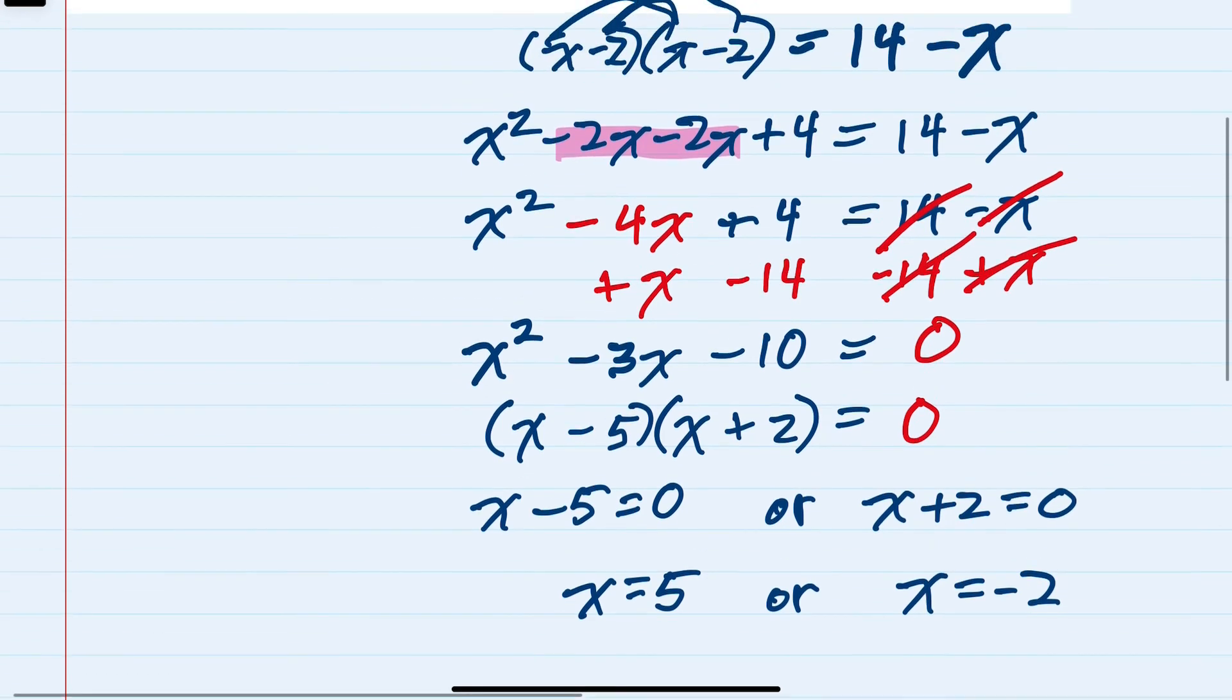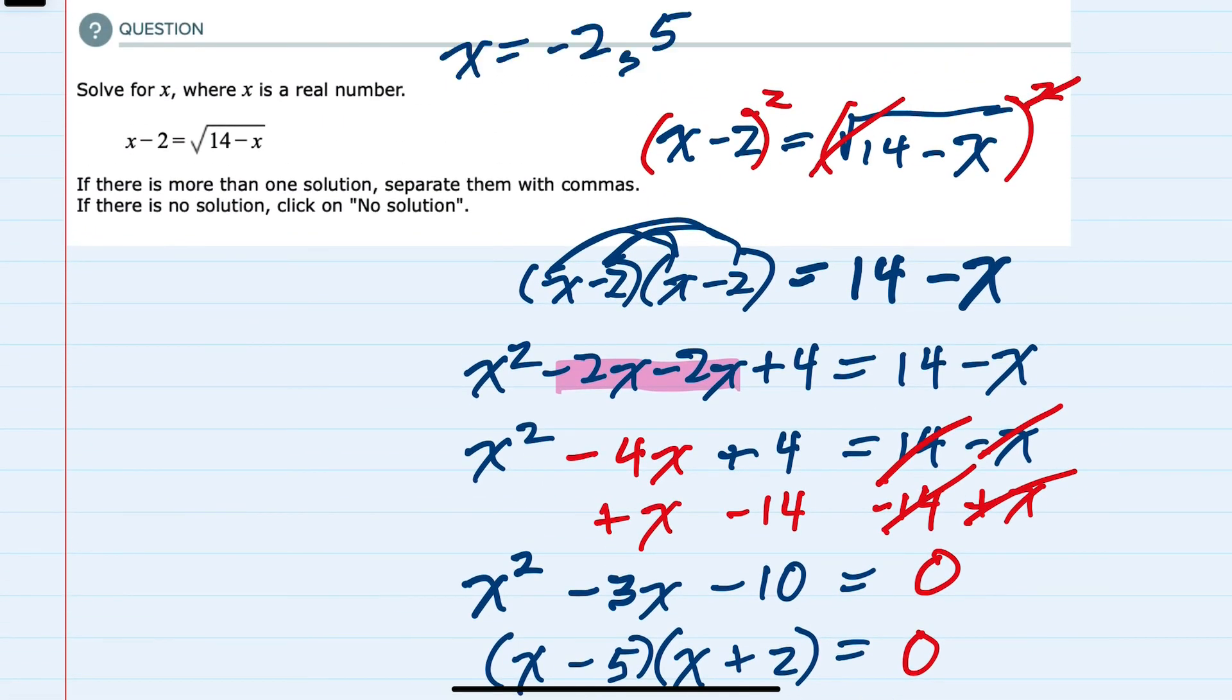I want to look back at the original question to see if either of those result in a negative underneath the radical. So when I plug both of those values in to the x in the radical, neither of them give me a negative, so I don't end up taking a square root of a negative with either of those two solutions, so that means both of those solutions are real.